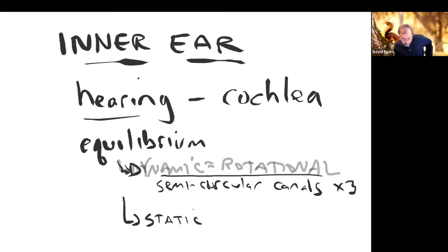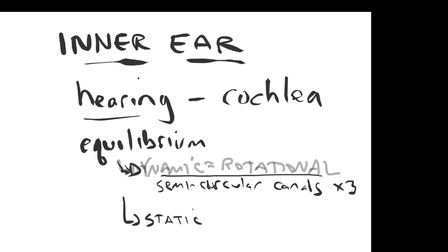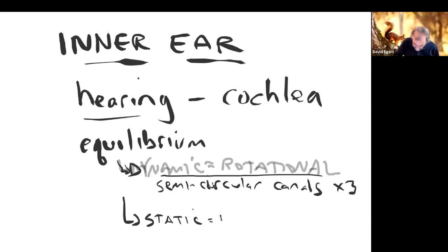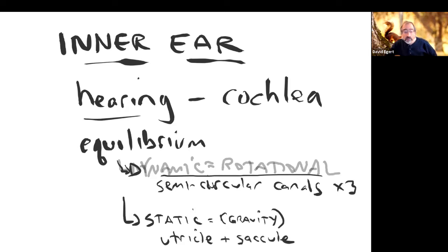Then the other kind of equilibrium we call static equilibrium. This is basically detecting which way gravity is pulling. That's going to be the utricle and the saccule, also located in the inner ear.